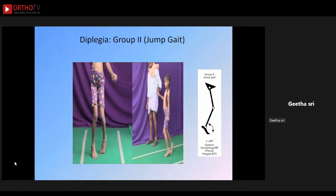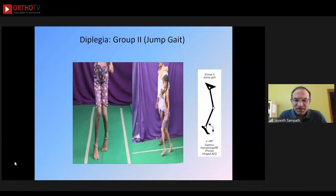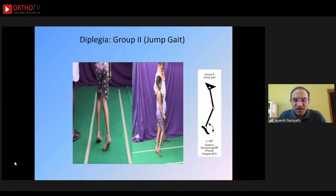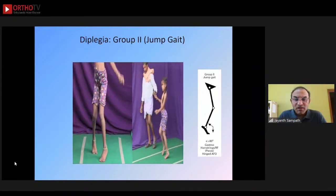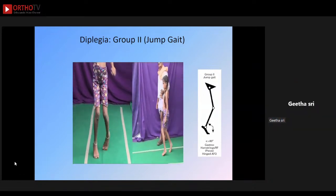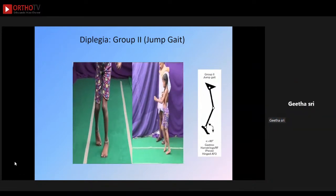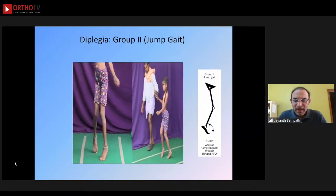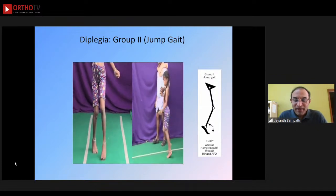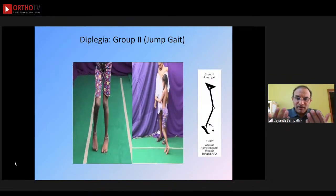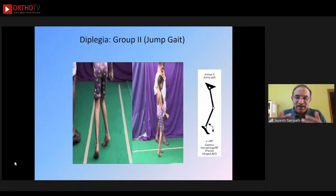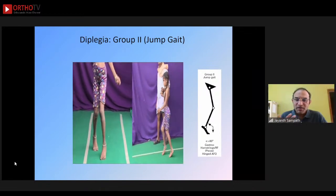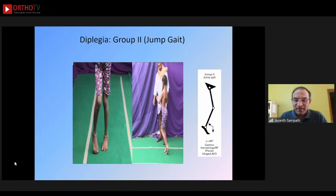Moving to jump knee gait pattern — group two — another girl with diplegia. In addition to equinus at the ankle, she also has flexion of the knee. There is also a 2B pattern where they have equinus of the ankle and the knee starts off in flexion but then moves into hyperextension — this is called recurvatum gait, or 2B gait pattern.